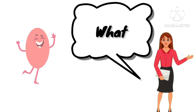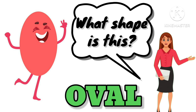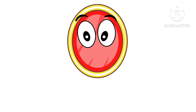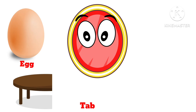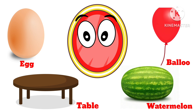What shape is this? This is an oval. So kids, let's learn about the objects that are oval in shape. Examples: egg, table, watermelon, and balloon are all oval in shape.